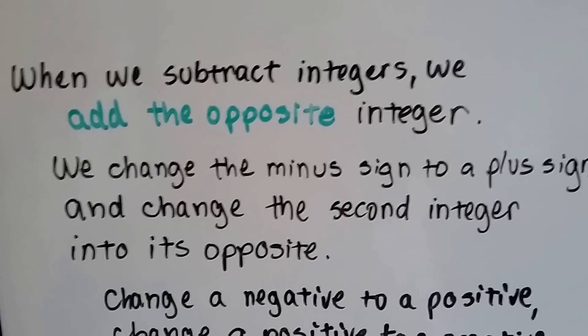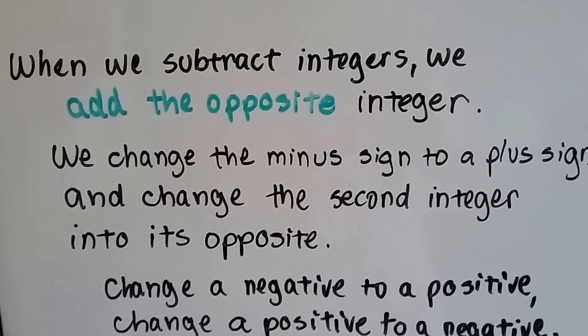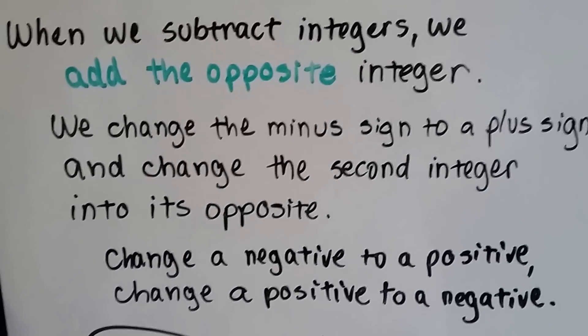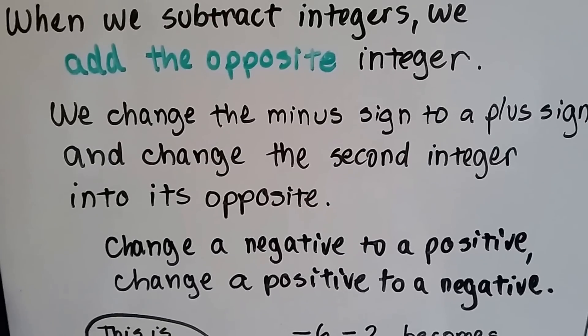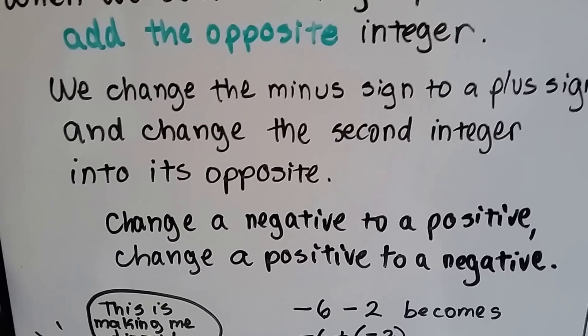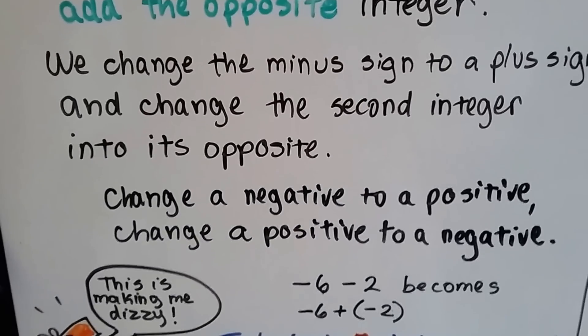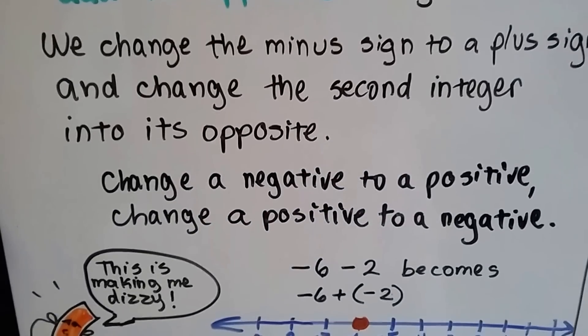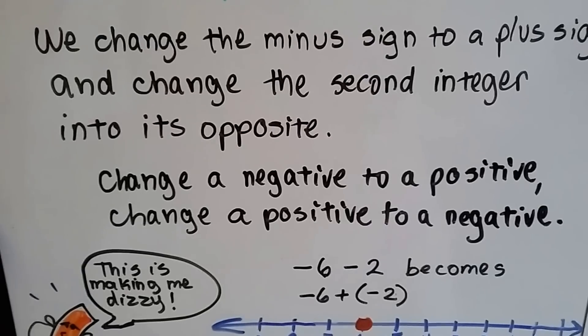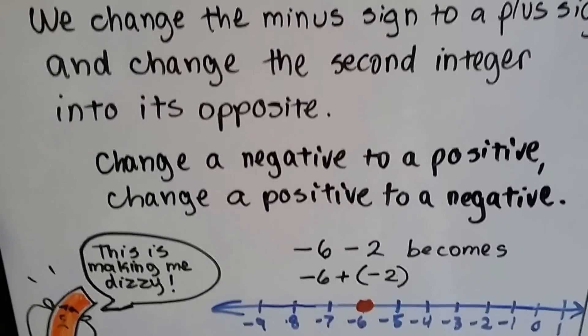When we subtract integers, we add the opposite integer. We change the minus sign to a plus sign, and we change the second integer into its opposite. If it's a negative, it goes to a positive. If it's a positive, it goes to a negative.